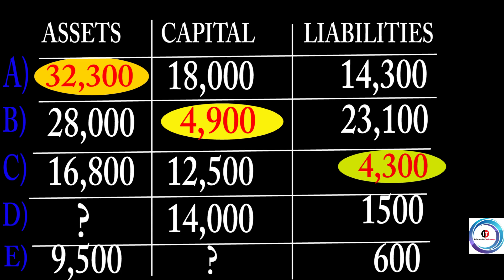So now this is going to be your challenge for today. Part D — you are given the asset value which is 14,000 and the liability which is 1,500. Part E — you will be given 9,500. I expect that you are going to work those two and give us the feedback. God willing, inshallah.